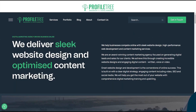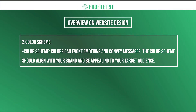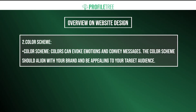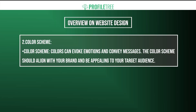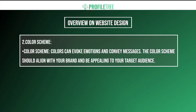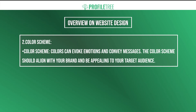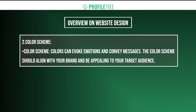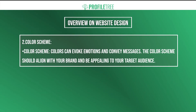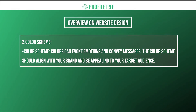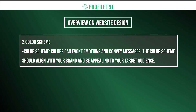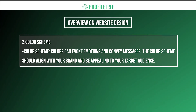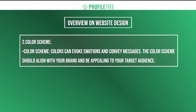The next point for visual design is the color scheme. Colors can invoke emotions and convey messages — the color scheme should align with your brand and be appealing to your target audience. For example, Profile Tree's logo color is green. We have a slight dark background, and along with that we use white to blend everything together, but our brand color is really green. We picked a specific shade of green to make it more memorable — when people see that lighter green, they'll associate it with us.